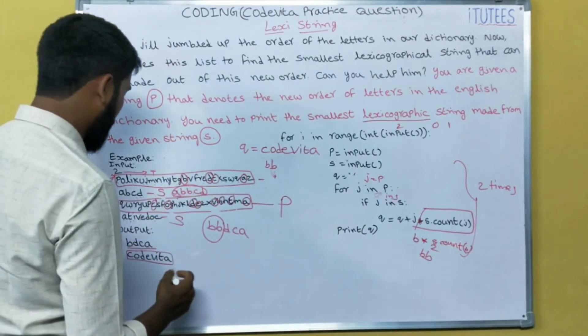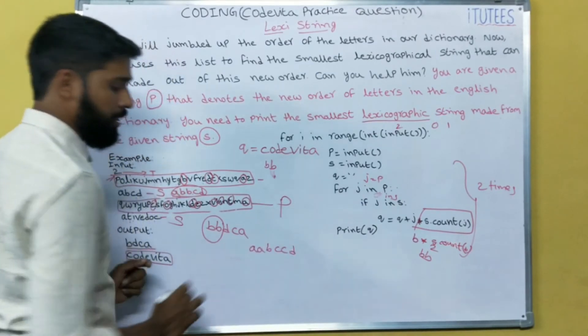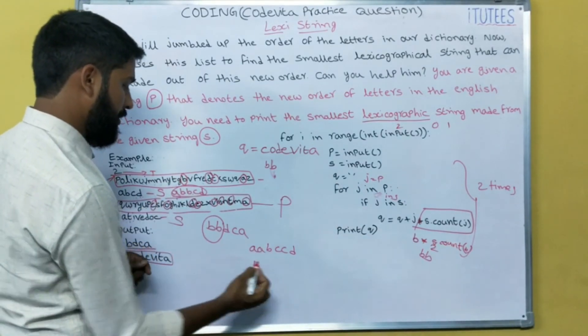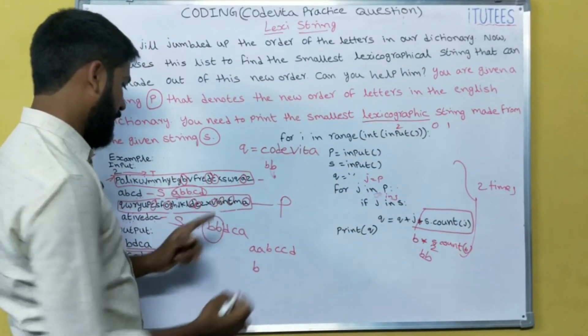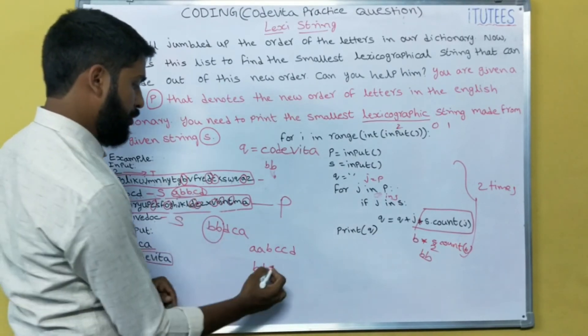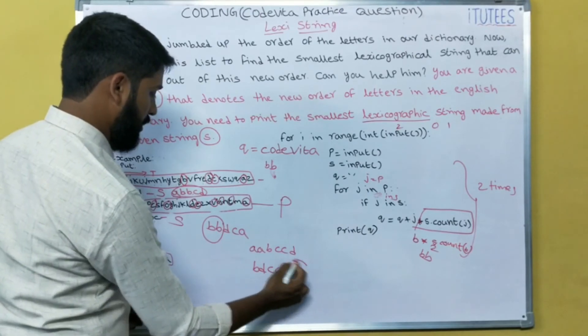We can discuss with one example, small example. A, A, B, C, C, D. So what is the output? As per this, B, D, C two times, A two times. This is the output. I hope you all understand this lexicographic string program.